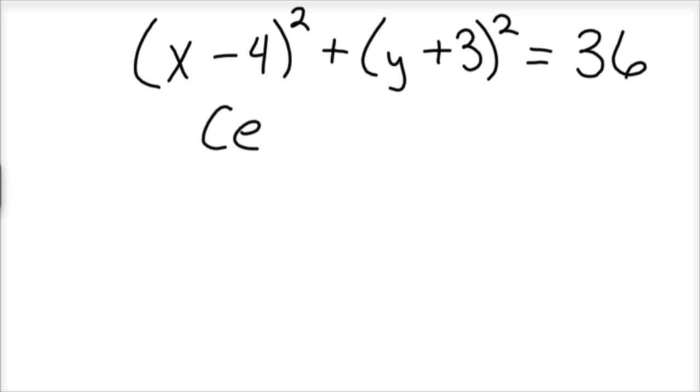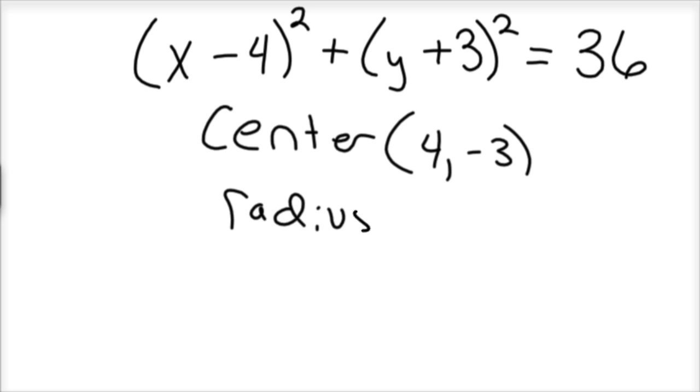Okay? So the center would be, the center for this circle would be (4,-3). And the radius for this circle is equal to 6, because that's the square root of 36.